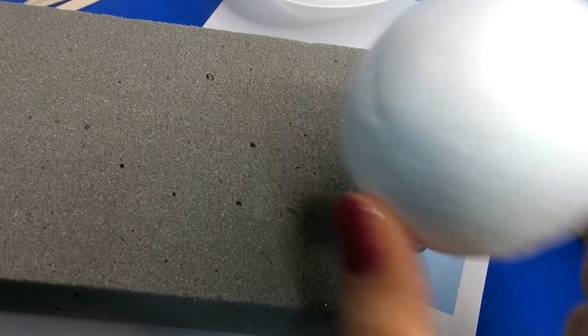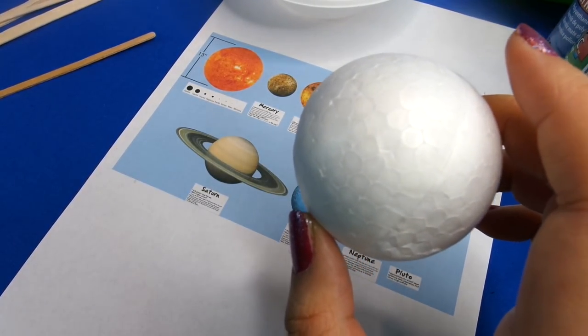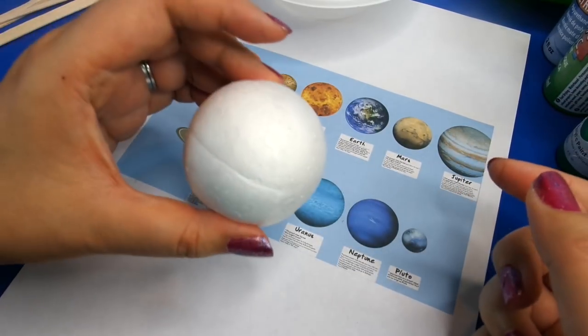But we're going to use these to stick the planets in to let them dry. Okay, well you can just balance them in the cup, it's up to you. So let's get started with Earth.